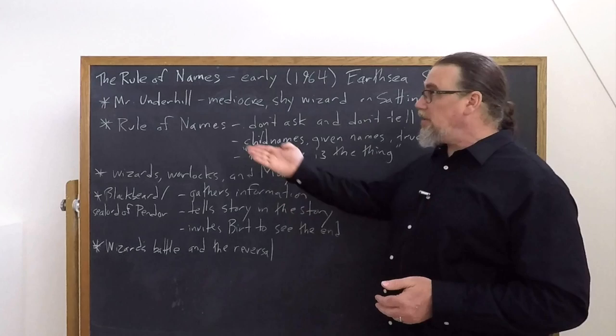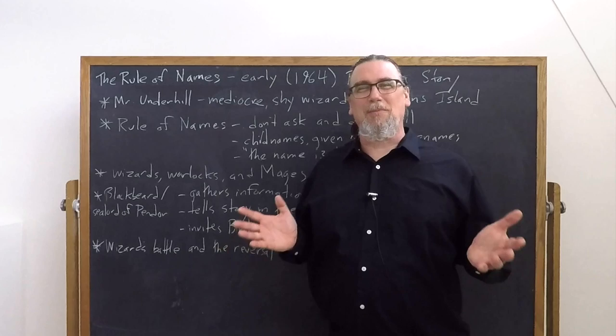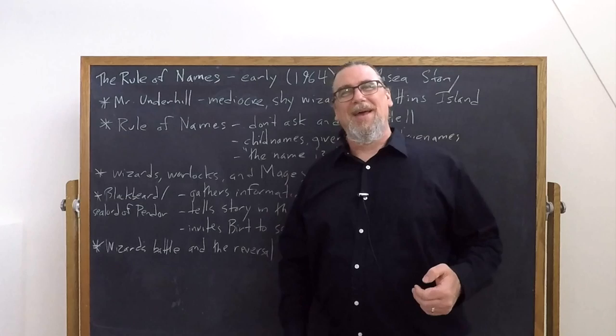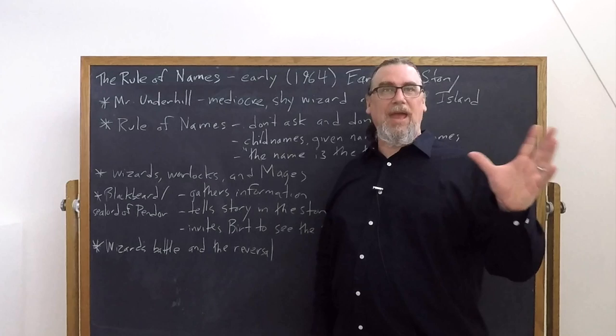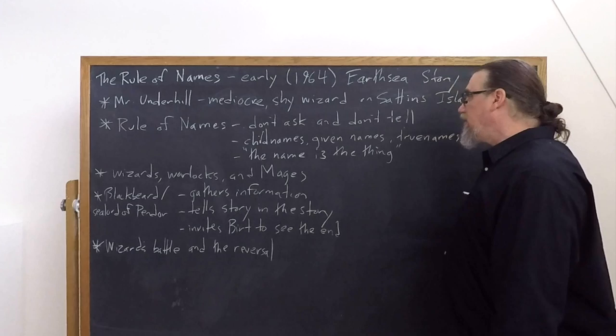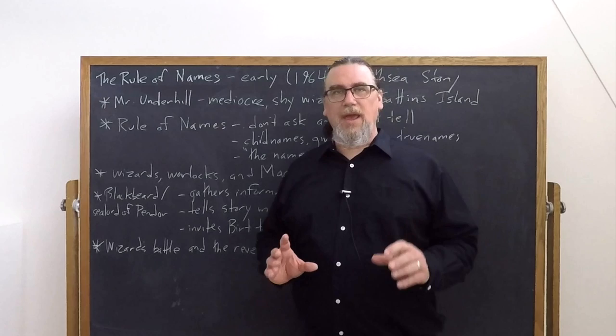There are what we can call child names—the names that are given to children by their parents. They're going to get a true name later. Given names, prime example of that is Mr. Underhill—he lives under a hill, there you go, that's his name. Or Blackbeard, he's the guy who sails in, he's got a black beard, there you go. Other names like Birt would maybe be child names that just made it into adulthood because they're living in the same place or they could be given names. And then we have true names.